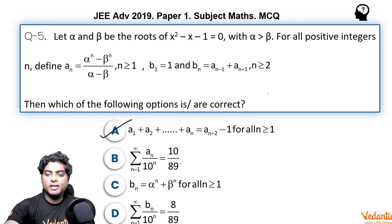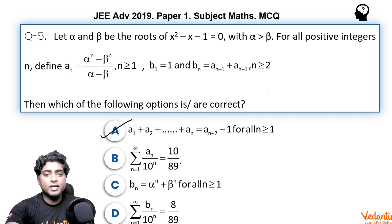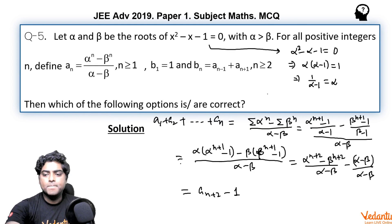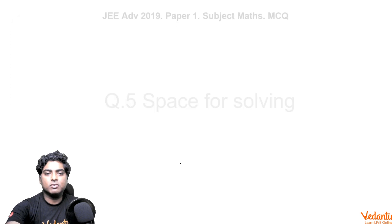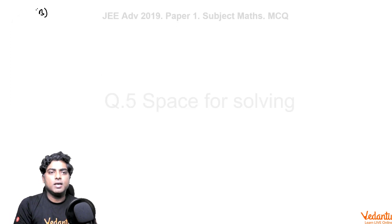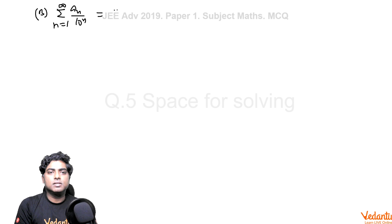Option B looks like an infinite GP: Σ a_n / 10^n. Since a_n is defined in terms of α and β, I write Σ a_n / 10^n from n = 1 to infinity.